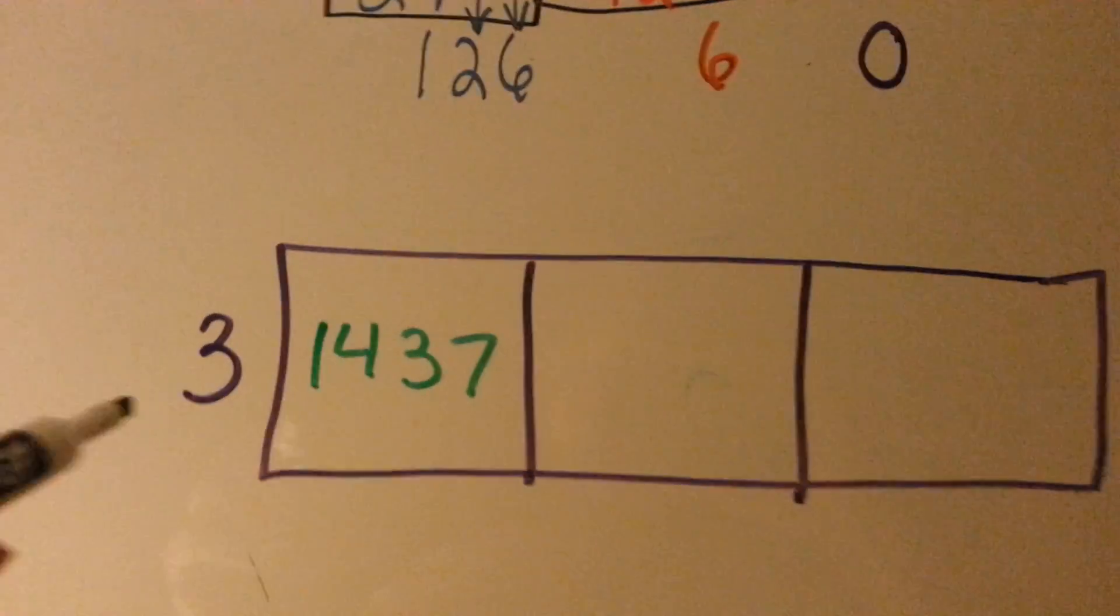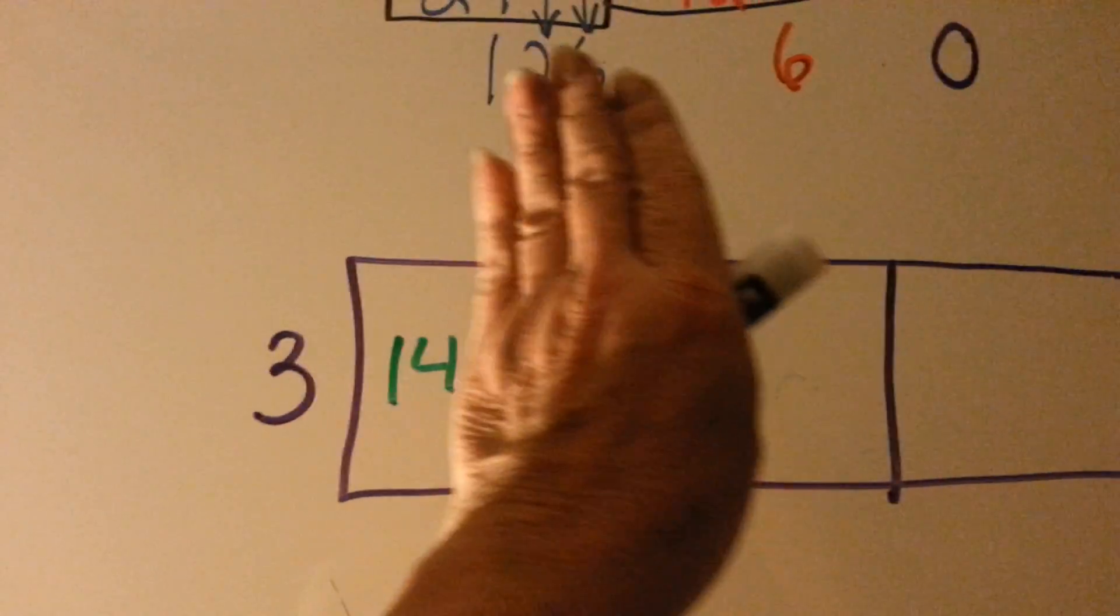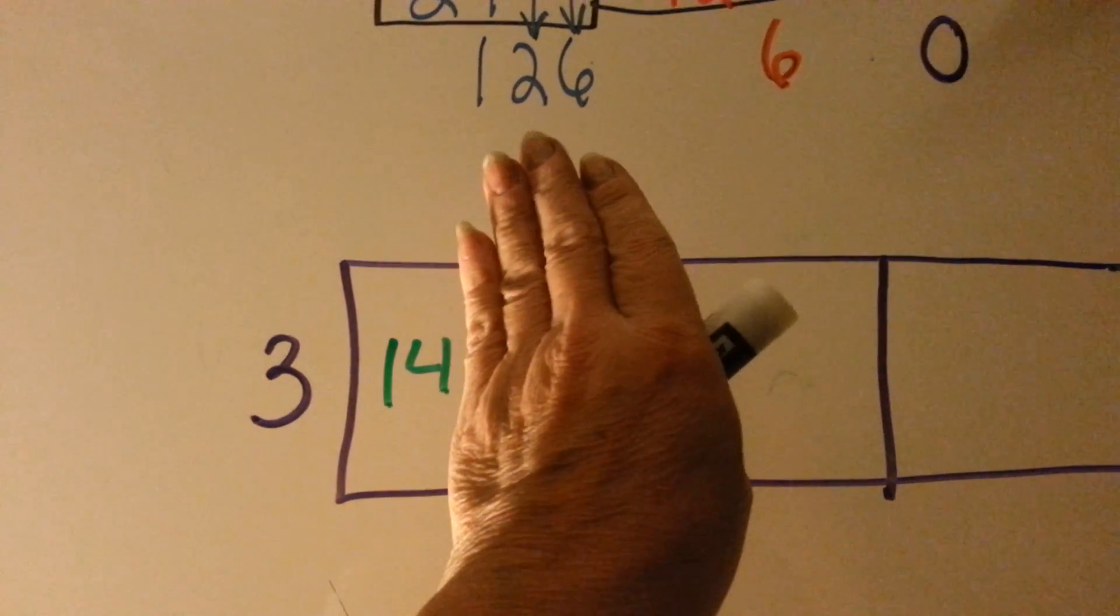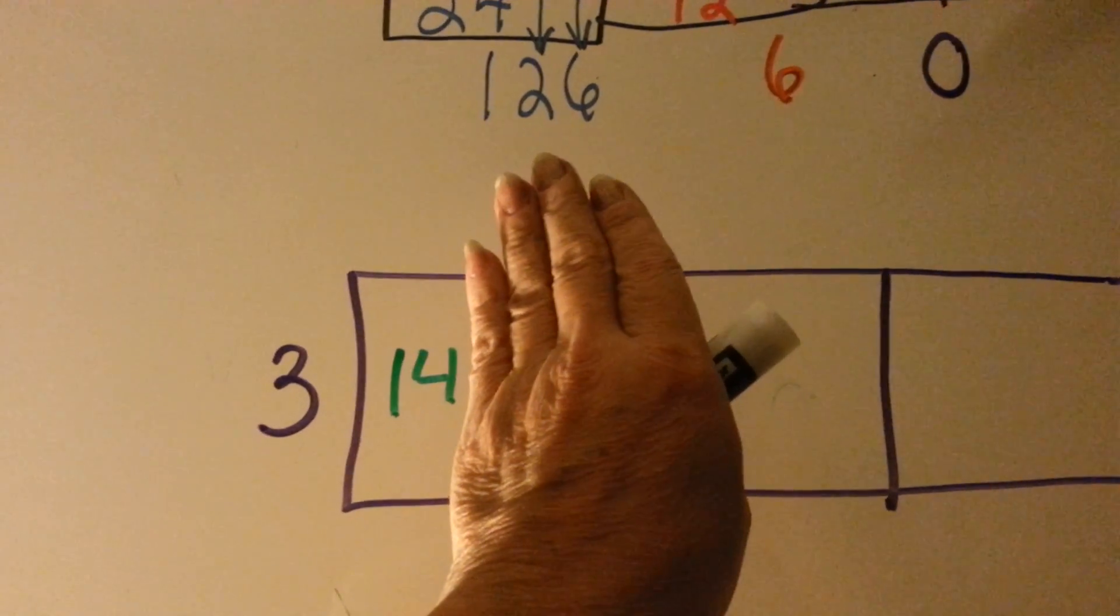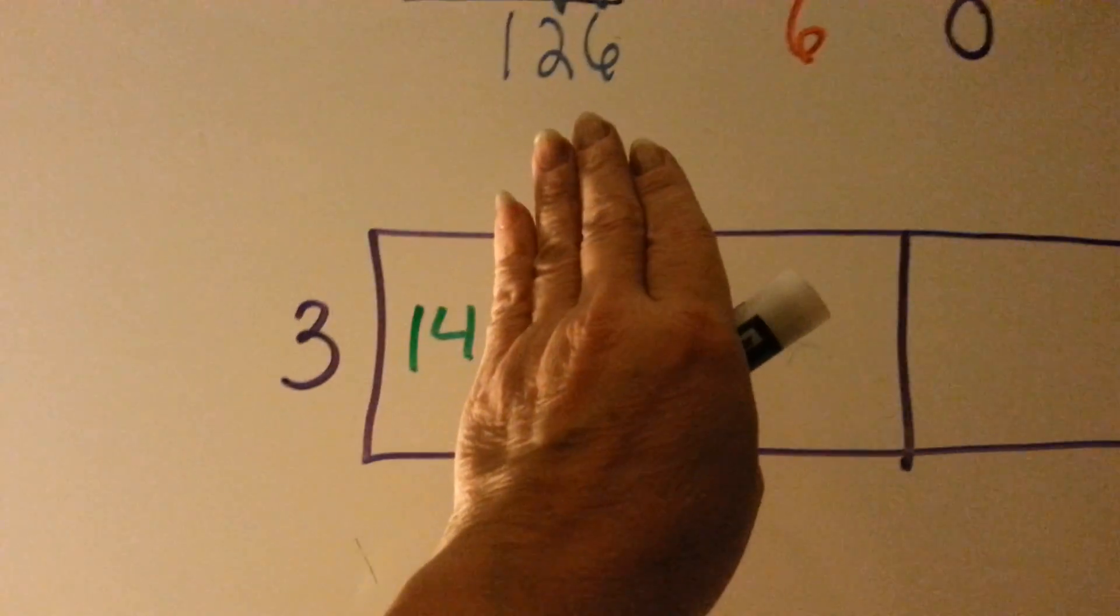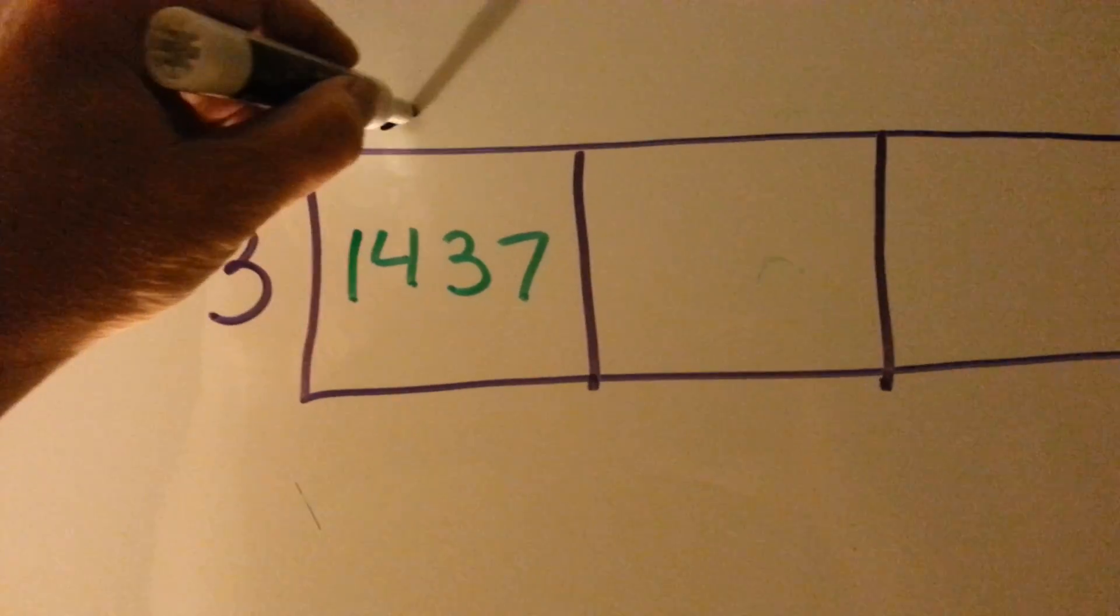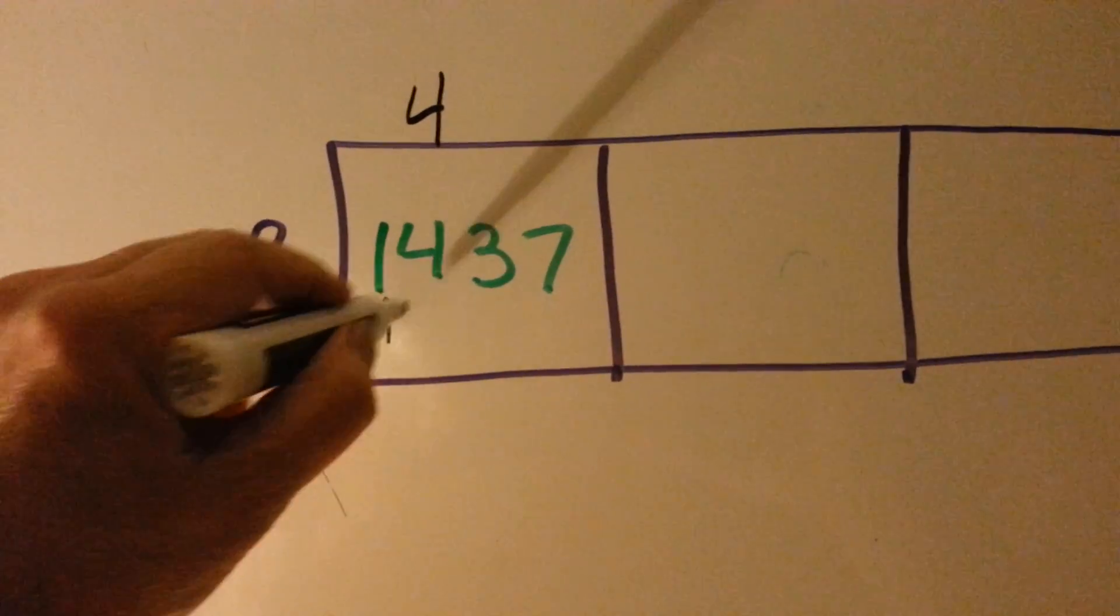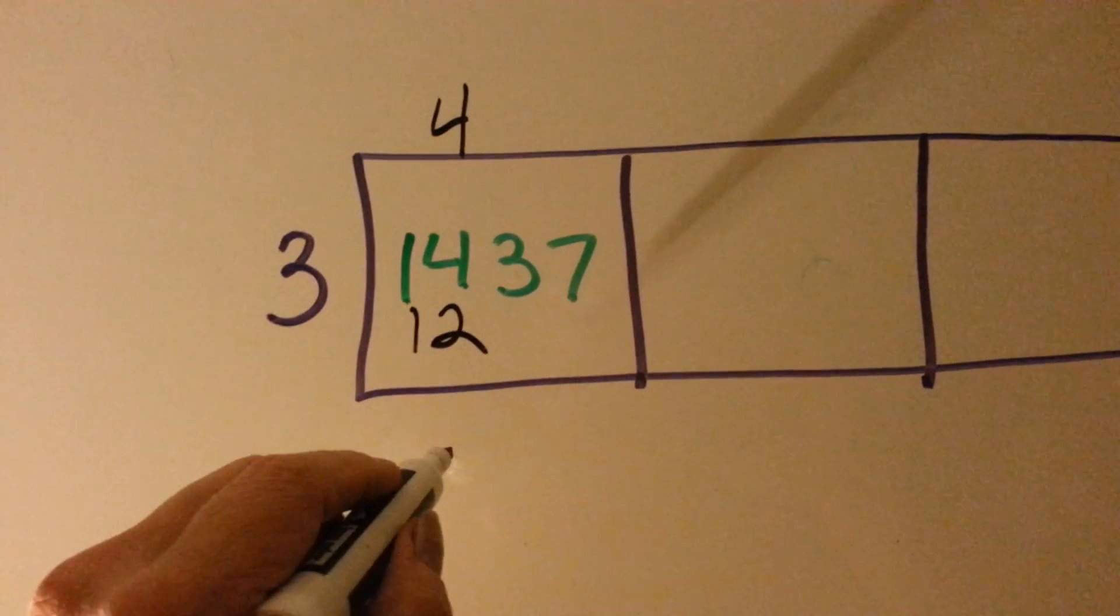So now I'm going to do this one in front of you. We have 3, and we ask ourselves, can it go into 1? No. Can it go into 14? Yes. How many times? We know from that one that 3 times 4 is 12. That'll fit in there. So let's put a 4 up here. 3 times 4 is 12, and now we can do our subtraction.